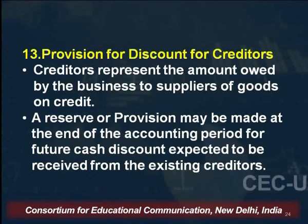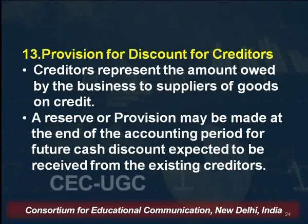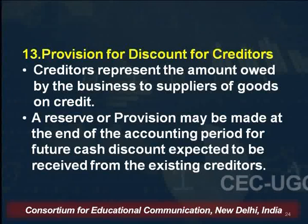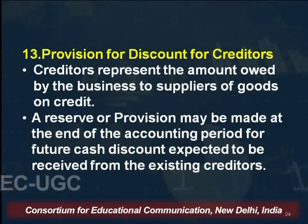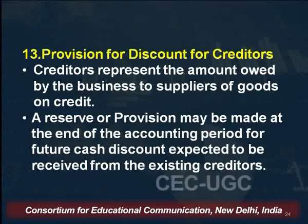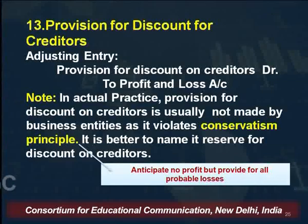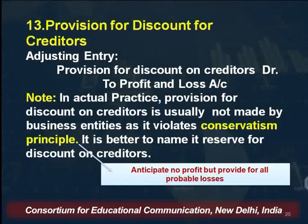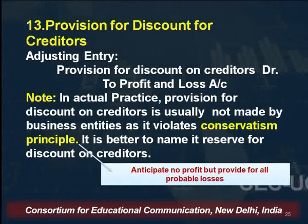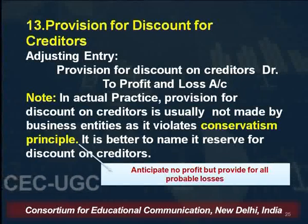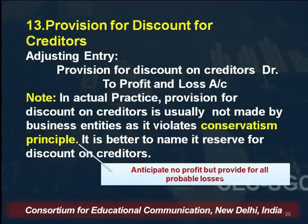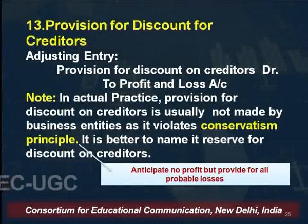In today's session, we are going to talk about the remaining entries, and the first entry is provision for discount on creditors. Creditors represent the amount owed by the business to the supplier of goods on credit. A reserve or provision may be made at the end of the accounting period for future cash discount expected to be received from existing creditors. However, in actual practice this provision is usually not made as it violates the convention of conservatism — also known as the prudence principle — which states: anticipate no profit but provide for all probable losses. Because of this, provision for doubtful debts is created, but provision for discount on creditors, which is an income for the business, is generally not created.